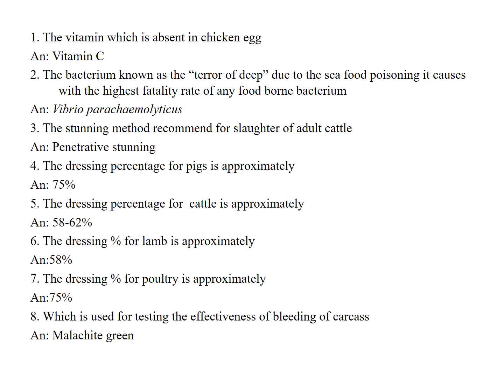If the question asks which substance is used for testing the effectiveness of bleeding of carcasses, the answer is malachite green. Malachite green is used for identification of correct bleeding of carcasses.